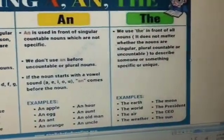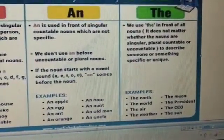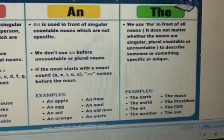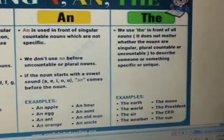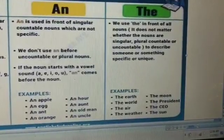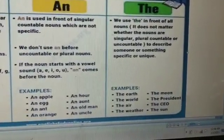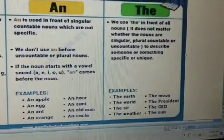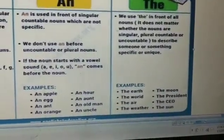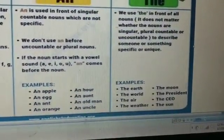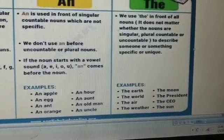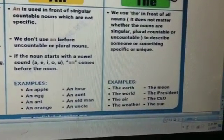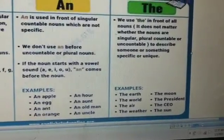The last one is 'the'. We use 'the' in front of all nouns. It does not matter whether the nouns are singular, plural, countable or uncountable. And to describe someone or something particular, specific or unique. For example: the earth, the world, the air, the weather, the moon, the president, the CEO, and the sun.